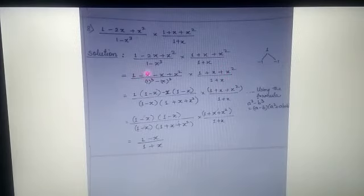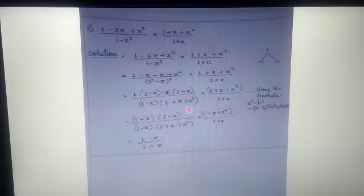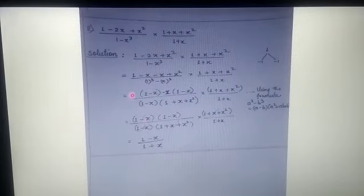From 1 - x - x + x²: the first two terms have 1 as common factor giving (1 - x), and the next two terms have x as common factor also giving (1 - x). So the numerator factors as (1 - x)(1 - x). The denominator from a³ - b³ is (1 - x)(1 + x + x²). The second fraction (1 + x + x²)/(1 + x) remains as is.